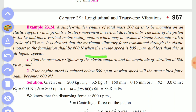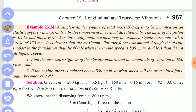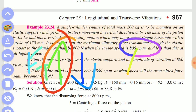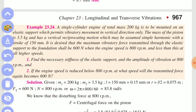When the engine speed is 80 rpm, Ft is 600 N, and less than this at all higher speeds. Therefore, this occurs at 80 rpm and 200 rpm. Find the stiffness of the elastic support and the amplitude of vibration at 80 rpm — that is, find stiffness k and x_max.